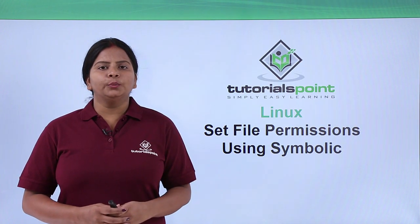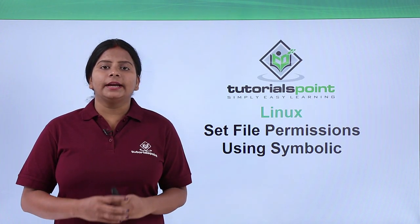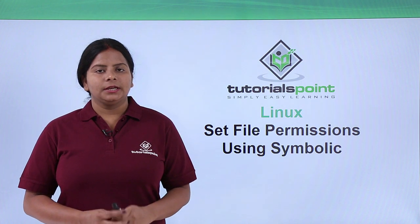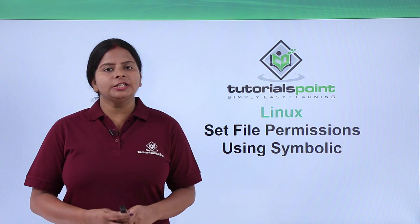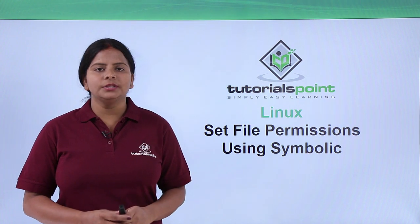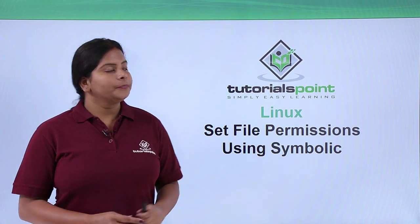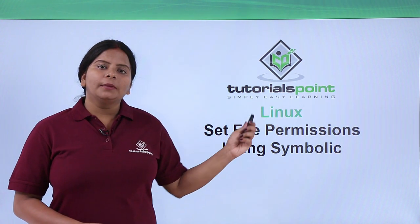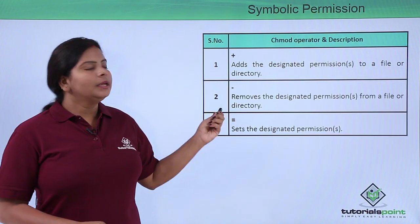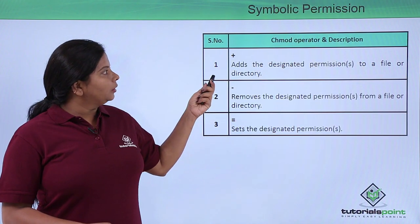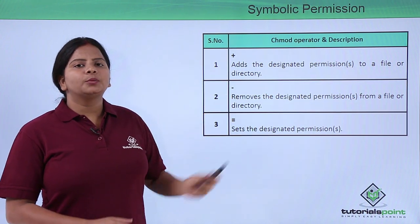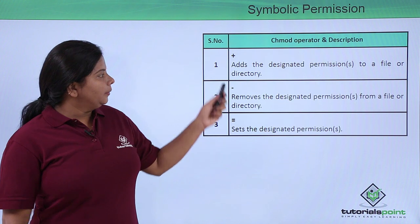In our previous video we discussed that chmod uses two types of permission settings. The first way is to set or change permissions using the symbolic method. With the symbolic method, we use certain characters or operators with the chmod command.